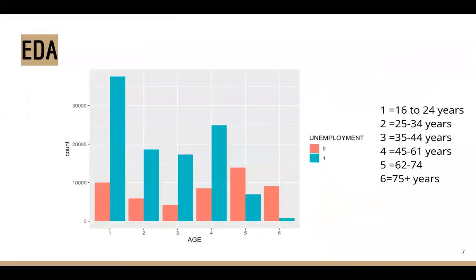From this graph, we see ages 45 to 61 had a high number of persons employed, yet the unemployment rate increases.